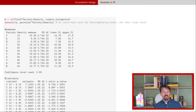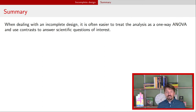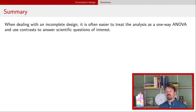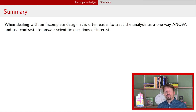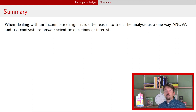In summary: when data are unbalanced, the analysis is straightforward — same as before. When data are incomplete — missing a combination of treatment variables — we use a one-way ANOVA analysis, akin to using just the interaction term in R's model notation, and then use contrasts to address scientific questions. The next video will discuss what happens when your main scientific question is finding the optimal density to use, and whether that depends on variety.